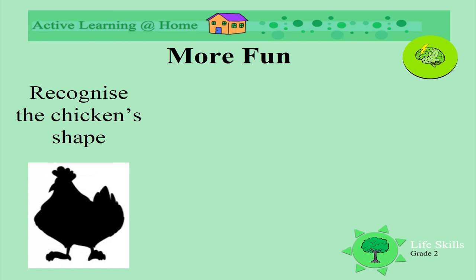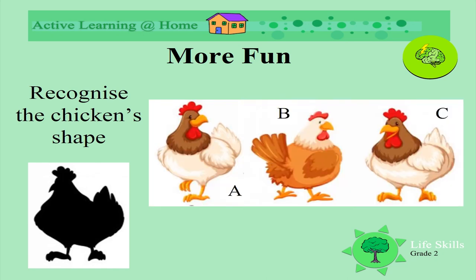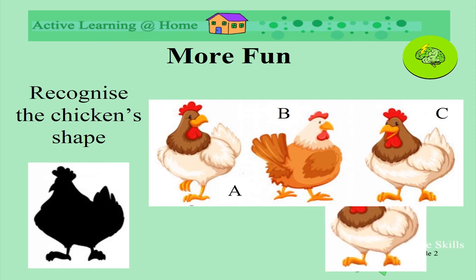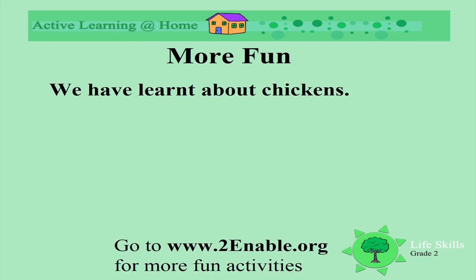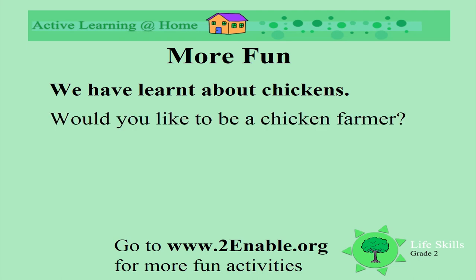Let's see if you can recognize this chicken shape - look at this silhouette. Is it A, B, or C? Look at the way the beak is pointing and the tail. Can you see the feet? Have a careful look. Well done - it's C! Today we've learned about chickens. Would you like to be a chicken farmer growing chickens?